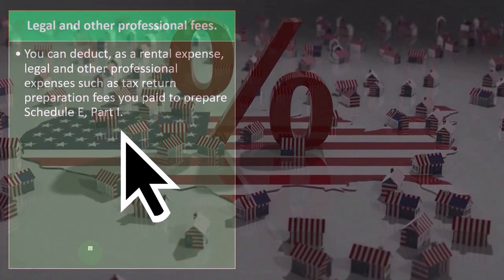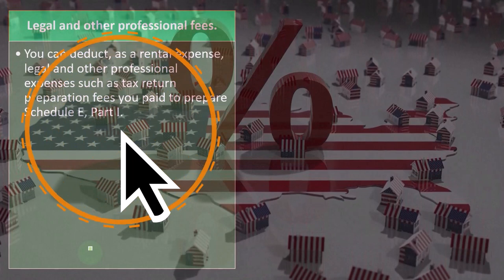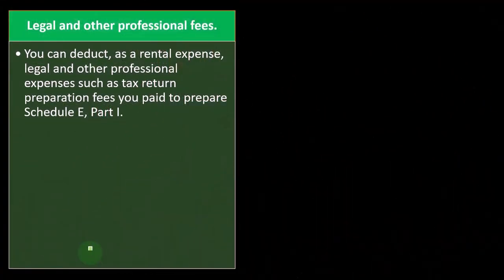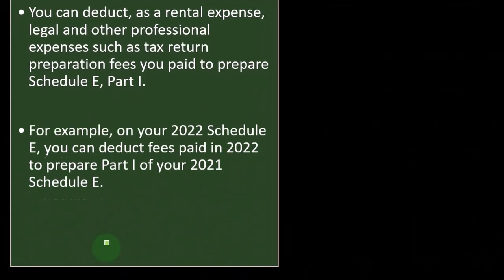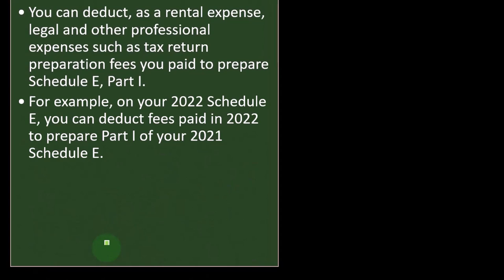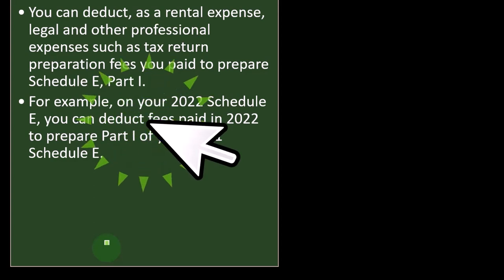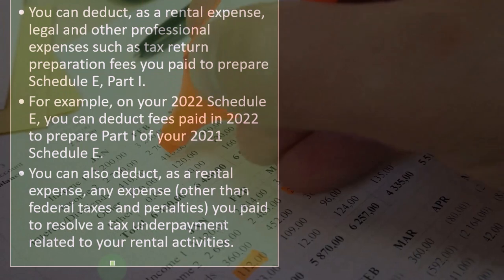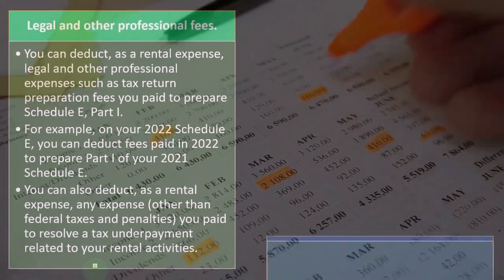Legal and other professional fees. You can deduct as a rental expense legal and other professional expenses, such as tax return preparation fees you pay to prepare Schedule E, Part 1. When you have tax return preparation, you can allocate part of the fee for the business use or Schedule E rental property. For example, on your 2022 Schedule E you can deduct fees paid in 2022 to prepare Part 1 of your 2021 Schedule E. You can also deduct any expense, other than federal taxes and penalties, you paid to resolve a tax underpayment related to your rental activities.